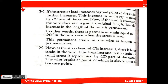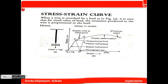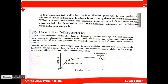When stress is zero, the permanent strain in the wire is called the permanent set. As the stress beyond C is increased, there is a large strain in the wire. This large increase in strain for small stress is represented by the CD part of the curve, and the wire breaks at point D, which is also known as the fracture point.